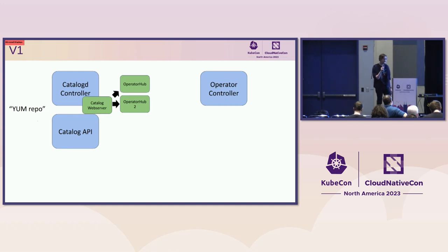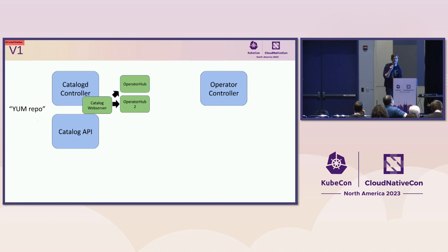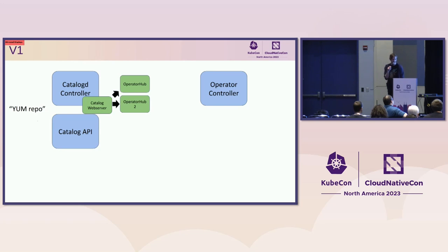CatalogD is sort of the replacement for catalog source. You'll be able to add a catalog for OperatorHub or perhaps your own private on-prem one, and it's going to download the APIs the same way OLM does today. Keeping with the package manager language we're trying to replicate — if you're familiar with a Linux package manager, this is the equivalent of a yum repo. You can add a repo, see what's available, browse things, and choose to install them.